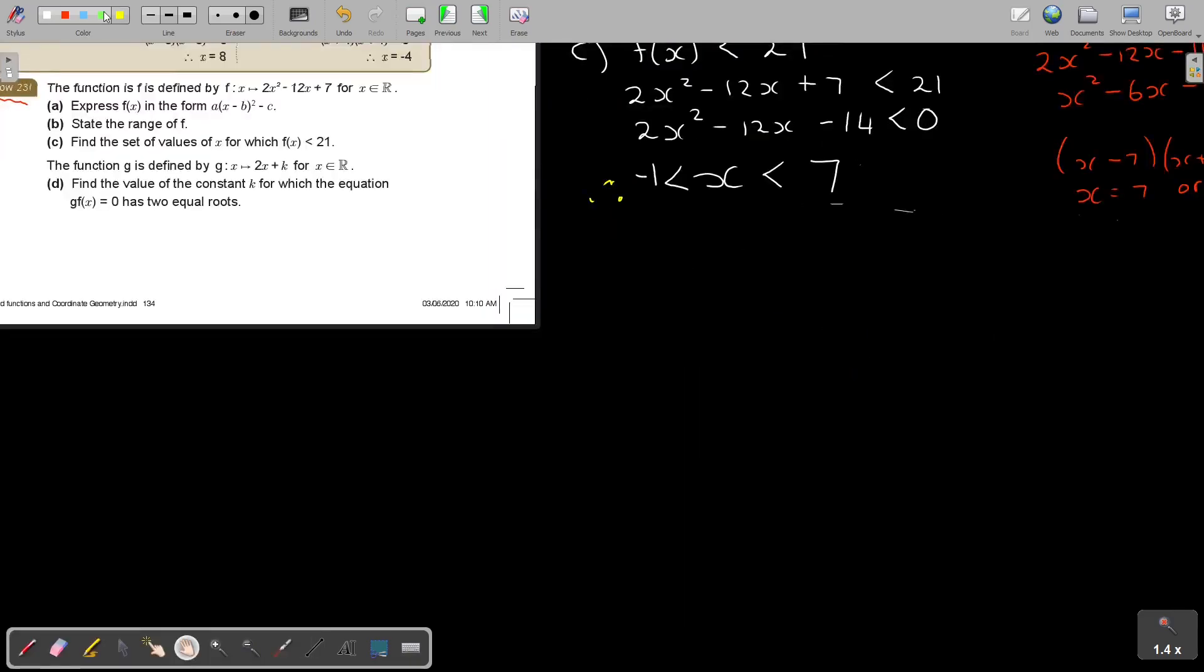Let's look at number d. The function G is coming in. Find the value of the constant k for which the equation has two equal roots. They actually already substituted these two into each other, put it equal to 0, and then we come to the equal roots.